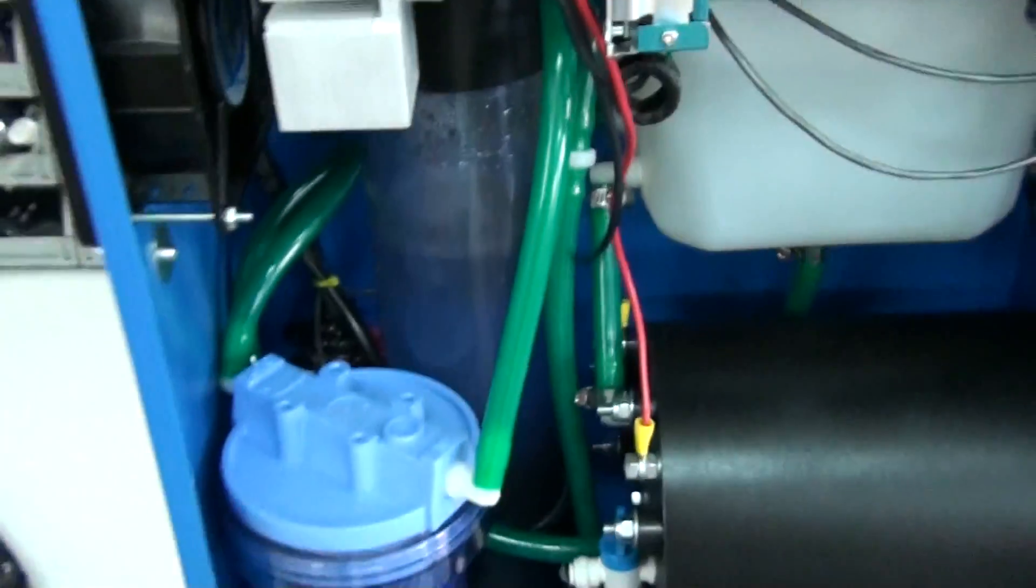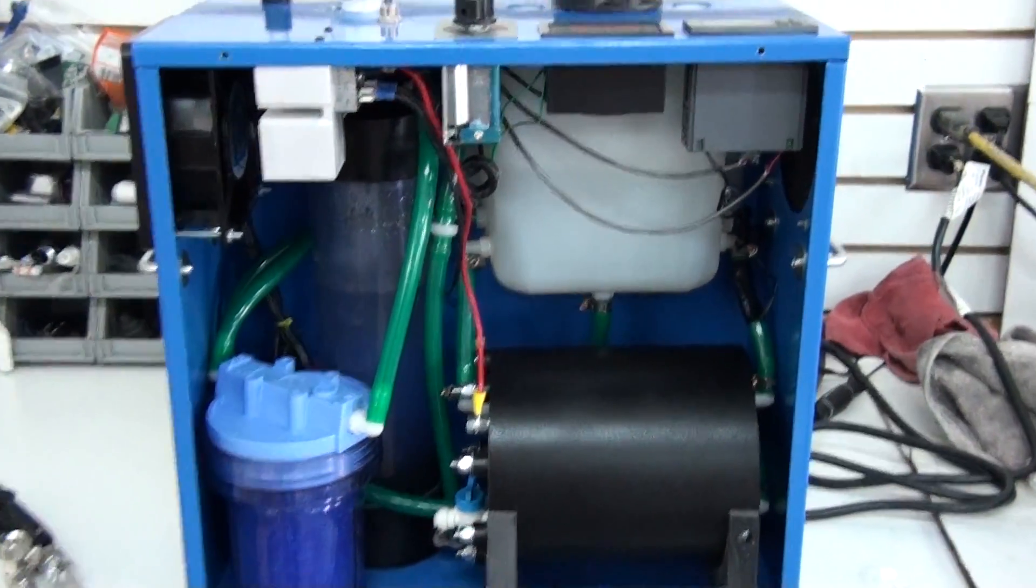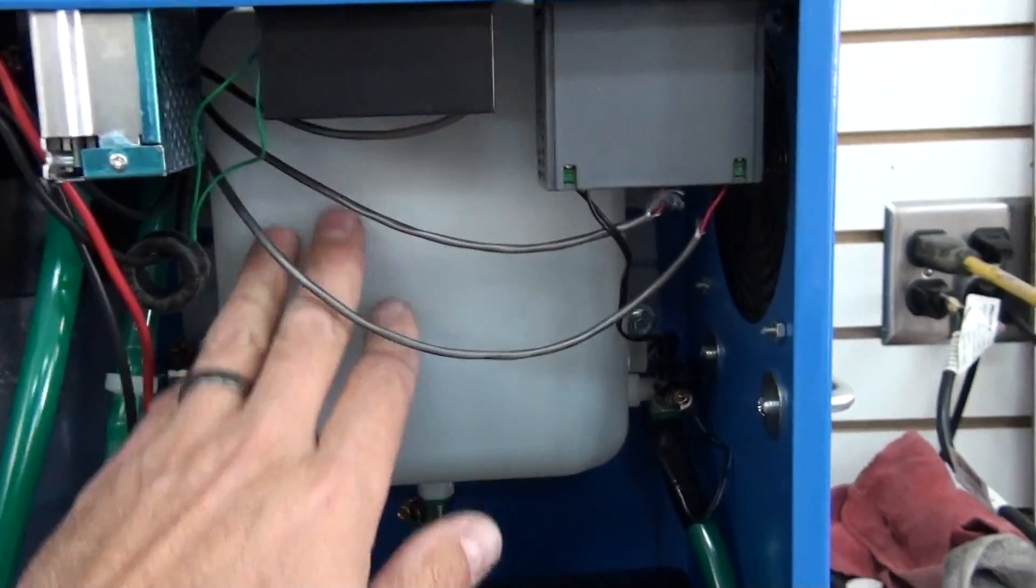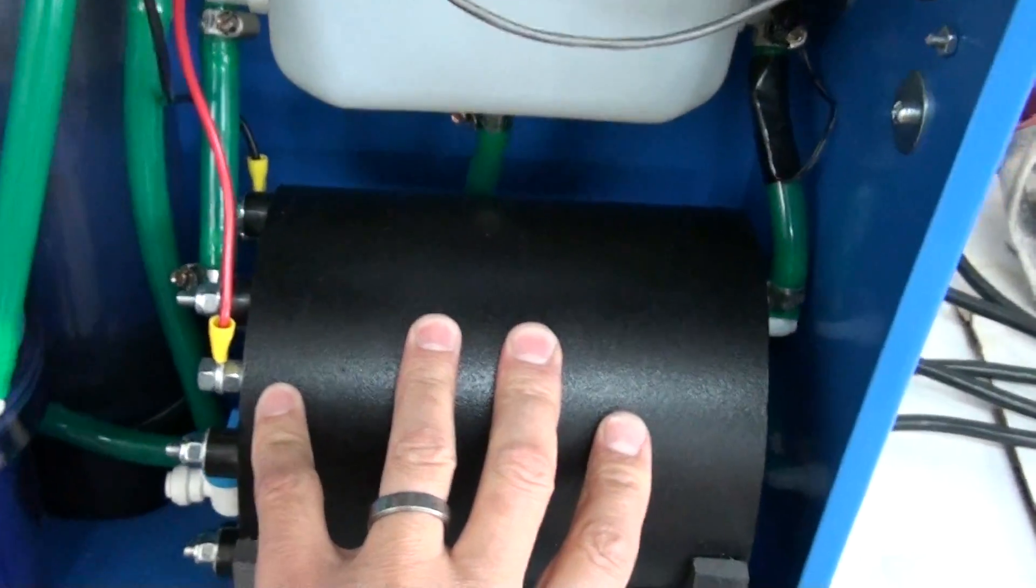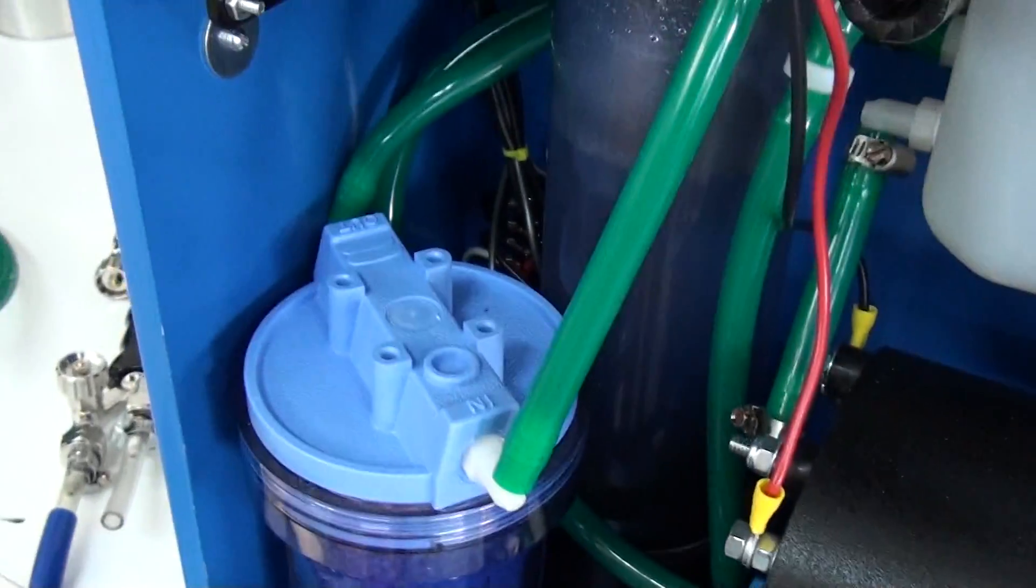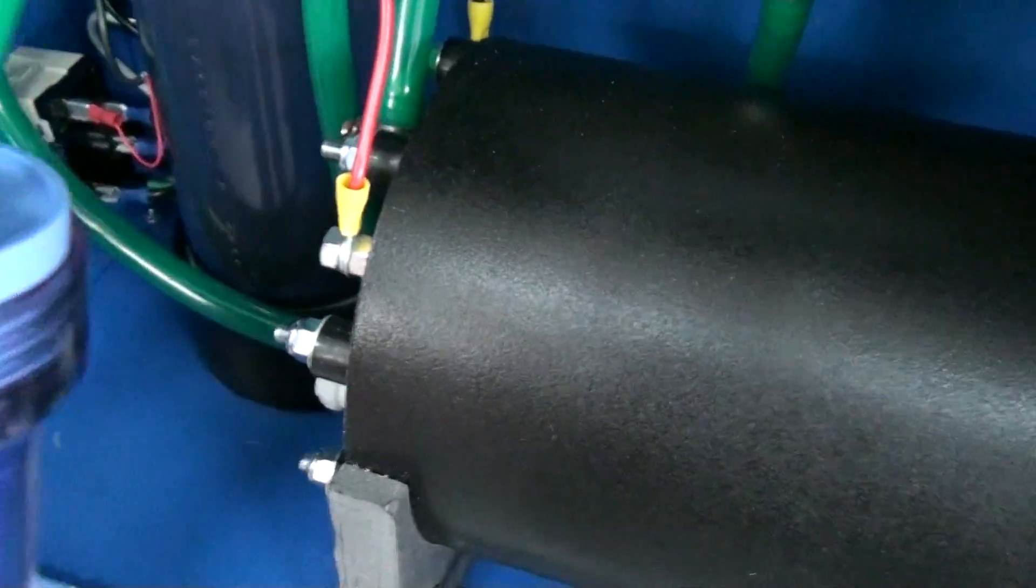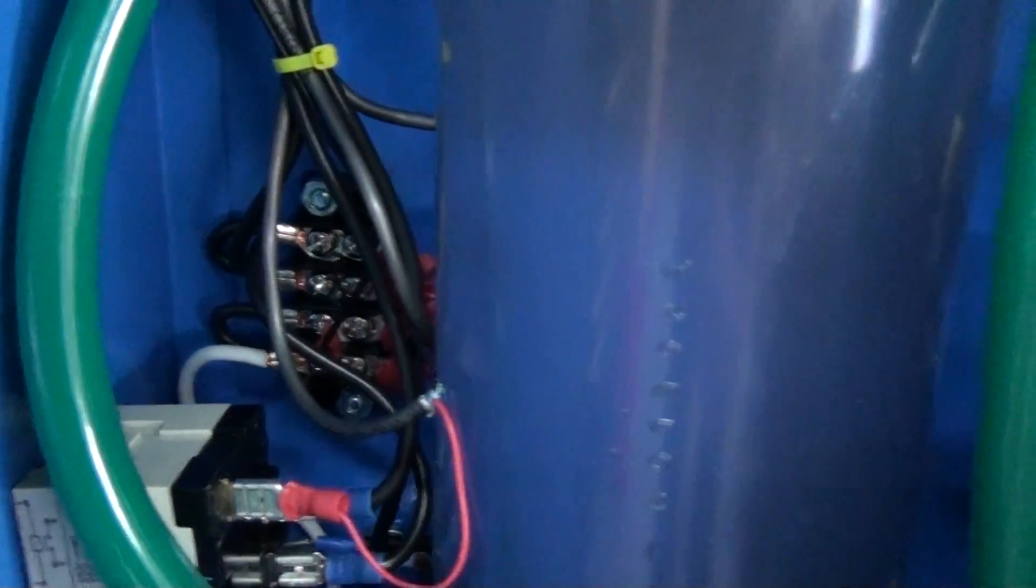So if we look down inside, you can see I got a three quart reservoir here. And here's the cell. It's a 59 plate cell. And right here we've got a dryer and another flashback arrestor. It can never have too many safety devices, in my opinion. And back behind it, we've got the electronics, there's an AC relay there and all the power connections back in the back.